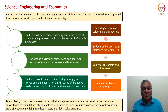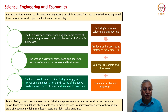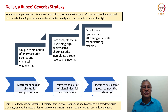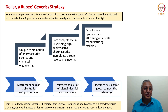Dr. Anji Reddy transformed the economics of the Indian pharmaceutical industry both in a macroeconomic sense — laying the foundations of affordable generic medicines — and in a microeconomic sense, with scope and scale of production redefining industrial costs and global value arbitrage. His generic strategy was simple but very impactful. The catch line was 'dollar-rupee': what a drug costs in the US in dollars should be made and sold in India for a rupee. He had a unique combination of pharmaceutical science and chemical engineering.